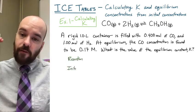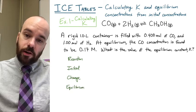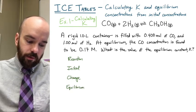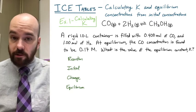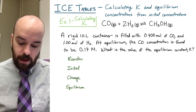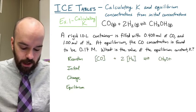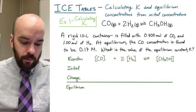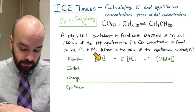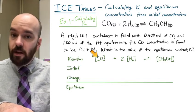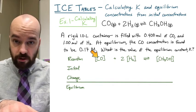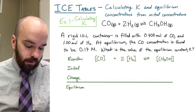We write this out with our reaction, then our initial concentrations, our change in concentration, and our equilibrium. That's why this is sometimes referred to as an ICE table — for Initial, Change, Equilibrium — or a RICE table if you include Reaction in the acronym. Our reaction is carbon monoxide plus two hydrogen gas in equilibrium with methanol concentration. Notice I put this in concentration brackets because whenever we substitute values in, it's really important that we're using molarities, not just moles.